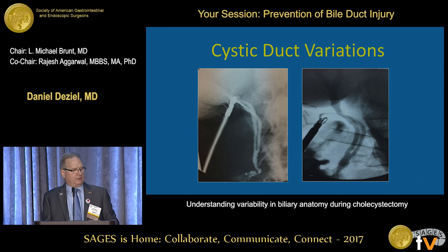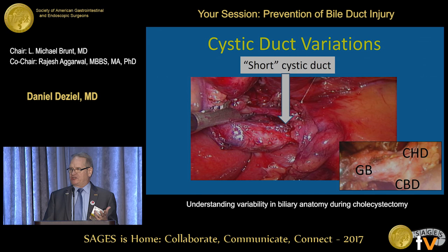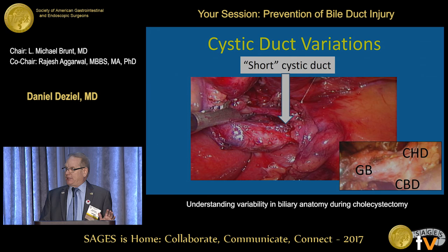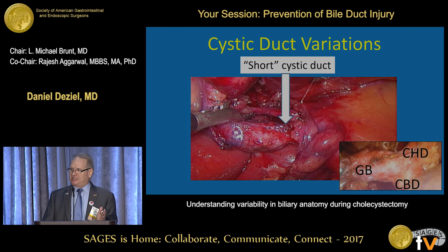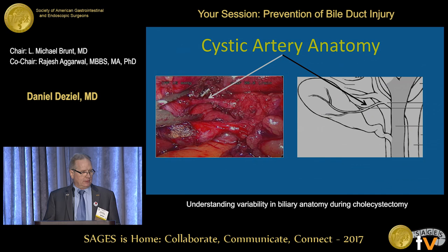A parallel cystic duct can cross the common duct, and it can go in front of it or behind it. The second high-risk situation is the so-called short cystic duct, which is the result of inflammatory contraction and can essentially result in a cholecystocholedochal fistula. Surgeons will sometimes describe an absent cystic duct, but this appearance is almost certainly the result of an acquired inflammatory condition. Anatomic studies based on dissection have not actually demonstrated true absence of the cystic duct.